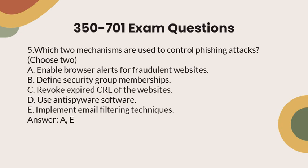Question 5: Which two mechanisms are used to control phishing attacks? Choose two. a. Enable browser alerts for fraudulent websites. b. Define security group memberships. c. Revoke expired CRL of the websites. d. Use anti-spyware software. e. Implement email filtering techniques. Answer: A, E.